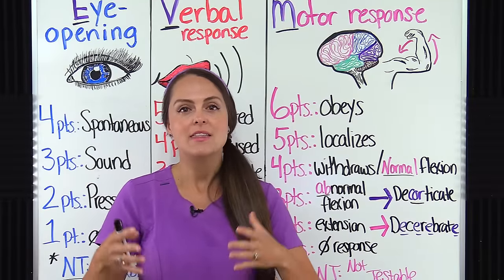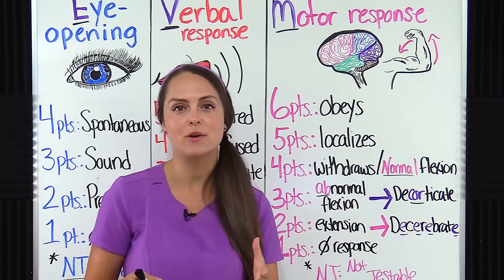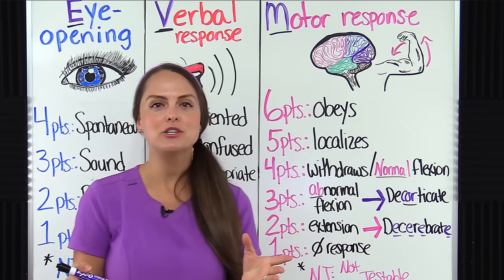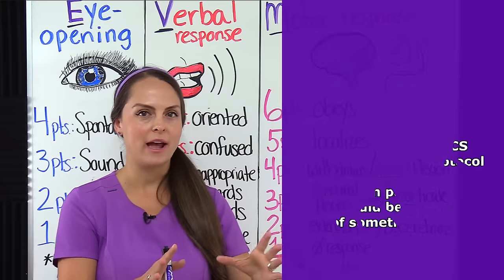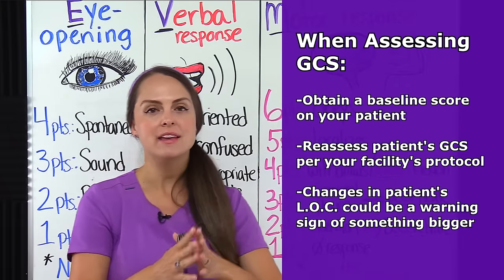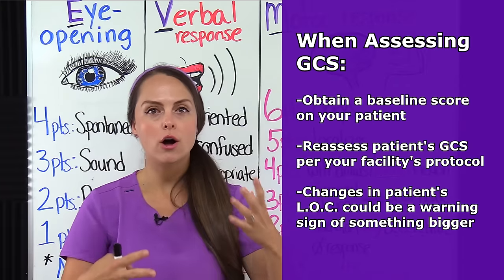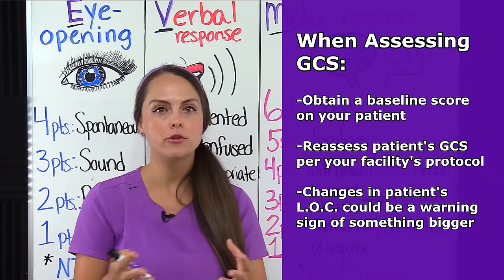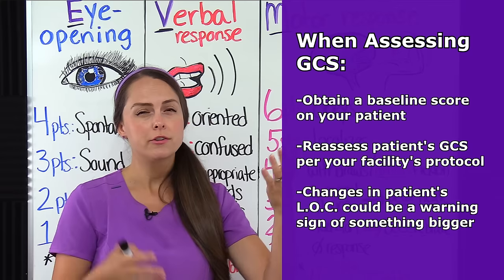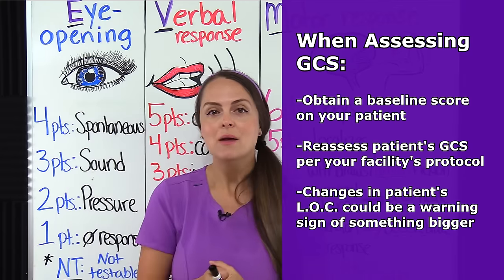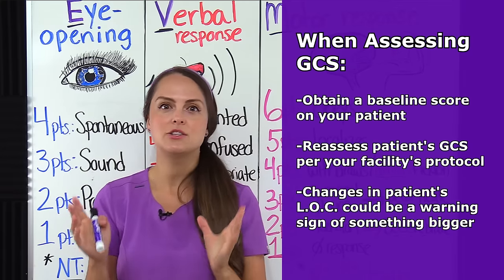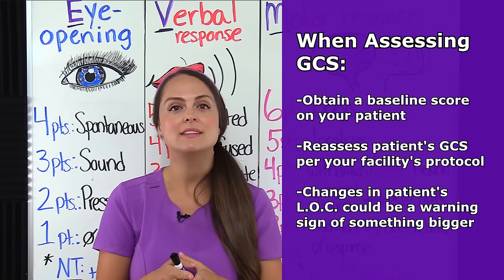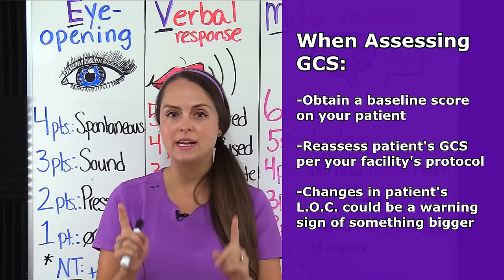Whenever they say GCS, they are referring to the Glasgow Coma Scale. When assessing the GCS, you want to make sure that you get a baseline score on your patient — you want to know where they started. Then throughout your shift, make sure you are often reassessing the GCS per your facility's protocol, because we want to be able to track whether they're improving, not really changing, or deteriorating. Any changes in level of consciousness could be a warning sign that something is going on with our patient and we need to investigate it.